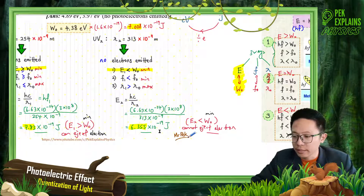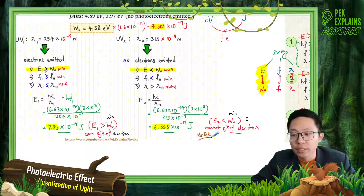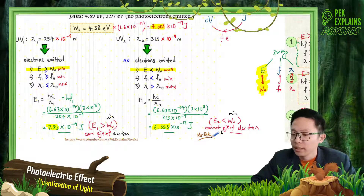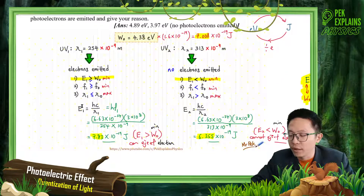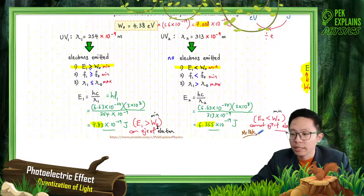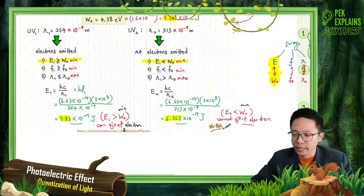In summary, you must always mention whether the energy is more than or less than the work function, then draw a conclusion about whether electrons can or cannot be ejected. Because the question asks us to explain why, you must show the calculation, calculate the energy of the photon, calculate the work function in joules, compare them, state whether one is more or less than the other, and then conclude whether electrons can be ejected or not. That's all for this question.